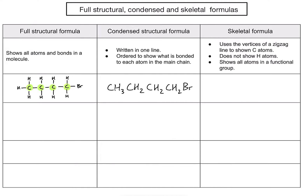For the skeletal formula, since there are four carbons, I draw a zigzag line with four vertices — first carbon, second carbon, third carbon, fourth carbon. That represents my four carbons, and I add an additional bond to a bromine on the end. I haven't drawn any hydrogens, but knowing each carbon always forms four bonds, I can work out how many hydrogens there must be.